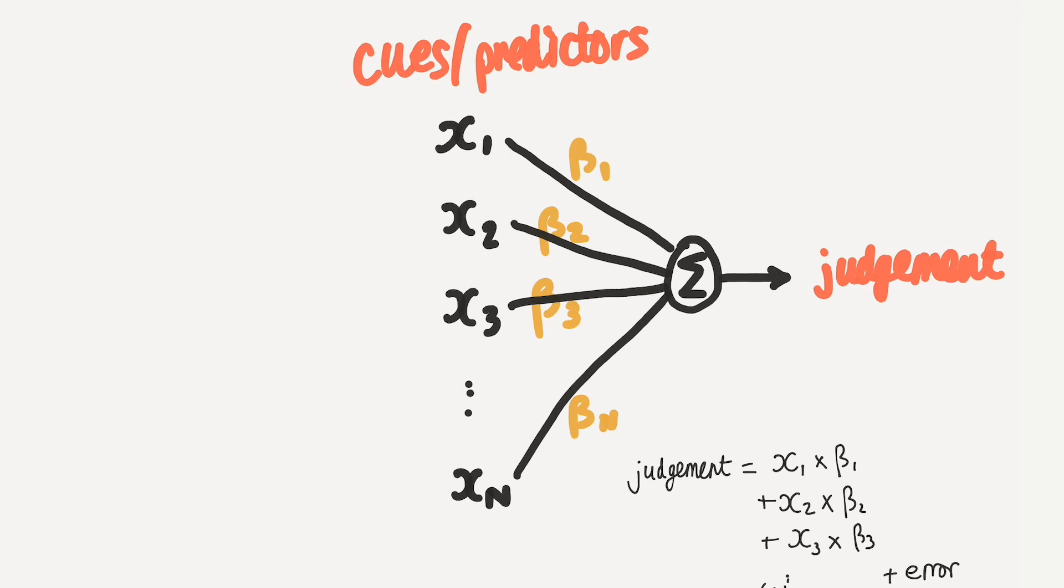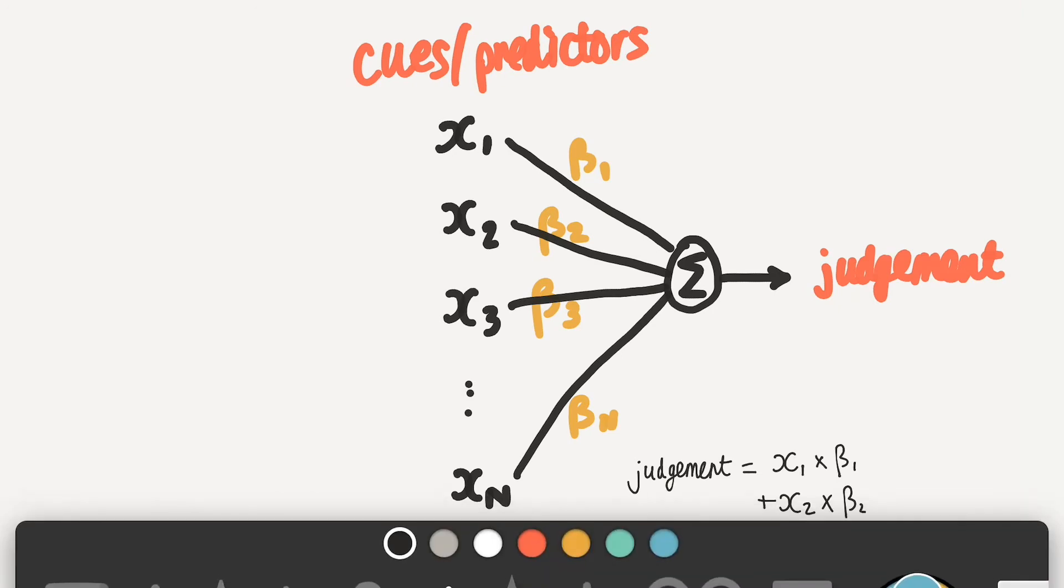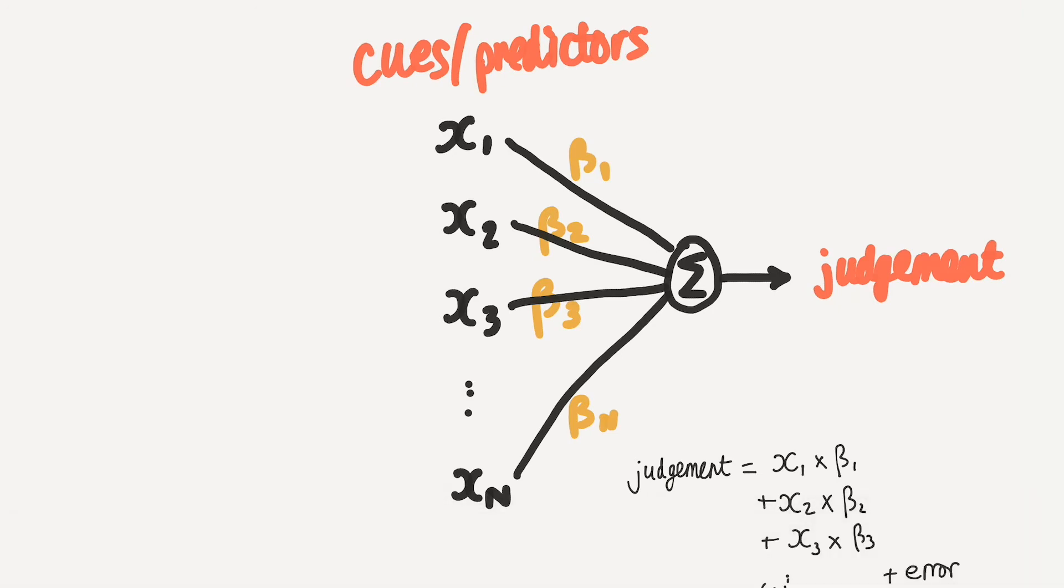So what you would do as a scientist is you would collect a data set. Let's draw this out, what that would mean. In order to collect this data set, you'd have to collect values of each of the predictors. So these would be columns in your data set. These could be things like age, height, weight, where you're from, and so on.